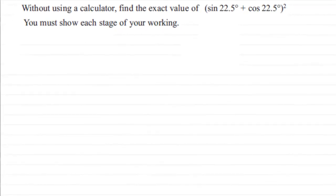Hi. Now in this example we've got to find the exact value of sin 22.5° + cos 22.5° all squared. And we've got to do this without using a calculator. And also we must show each stage of our working.